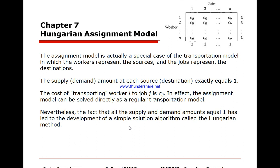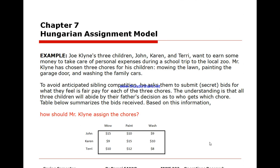In order to solve the assignment model we use the transportation model approach. In the first example, a father has three children — John, Karen, and Terry — who want to earn money for personal expenses during a school trip to the zoo. He chose three chores: mowing the lawn, painting the garage, and washing the family cars. To avoid conflict, he has them submit secret bids for what they feel is fair for each of the three chores, and all three children are bound by their father's decision on who gets which chore.